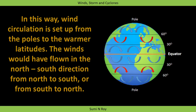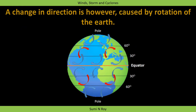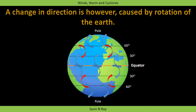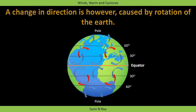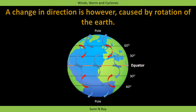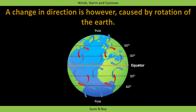In this way, wind circulation is set up from the poles to the warmer latitudes. The wind would have flown in the north-south direction — from north to south or from south to north. However, a change in direction is caused by the rotation of the earth. The wind produced by the uneven heating between the equator and the poles does not blow in an exact north-south direction, because the rotation of the earth on its axis causes a change in wind direction.